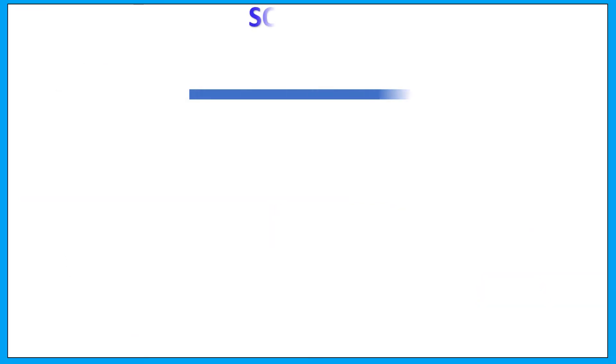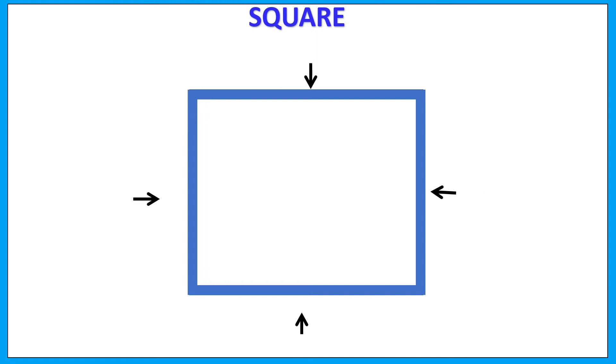This is a square. A square has four equal sides. Side 1, Side 2, Side 3, Side 4. It has four corners.